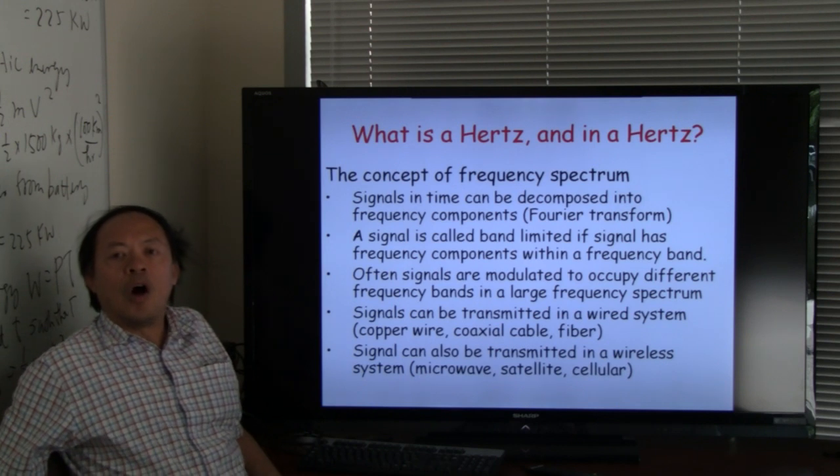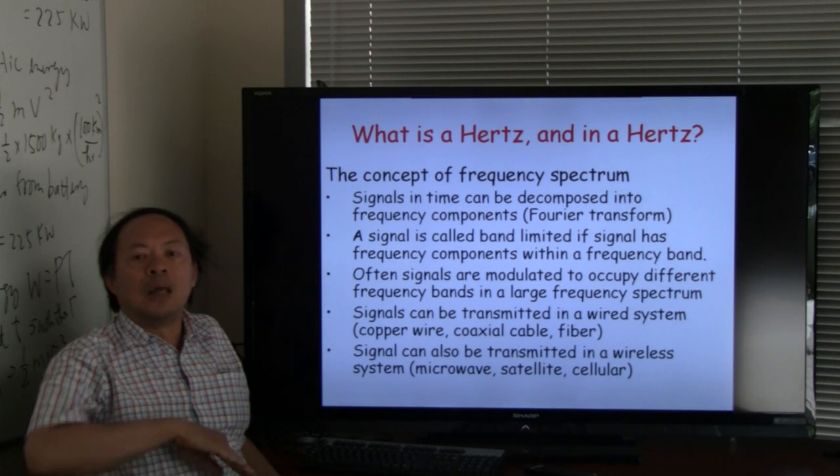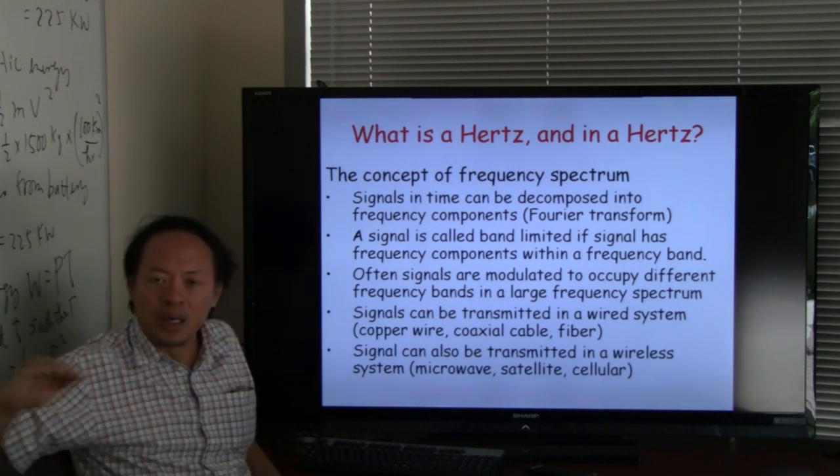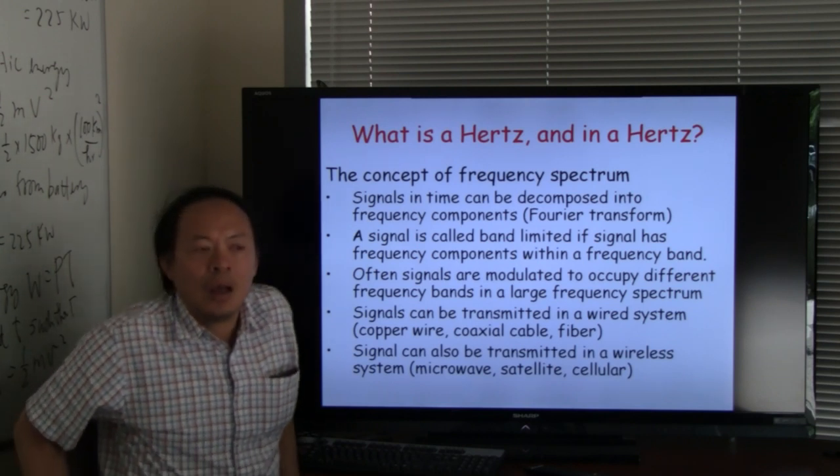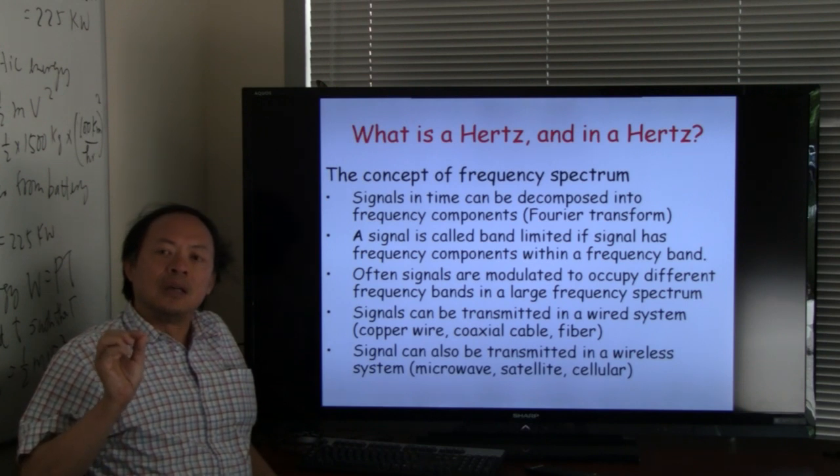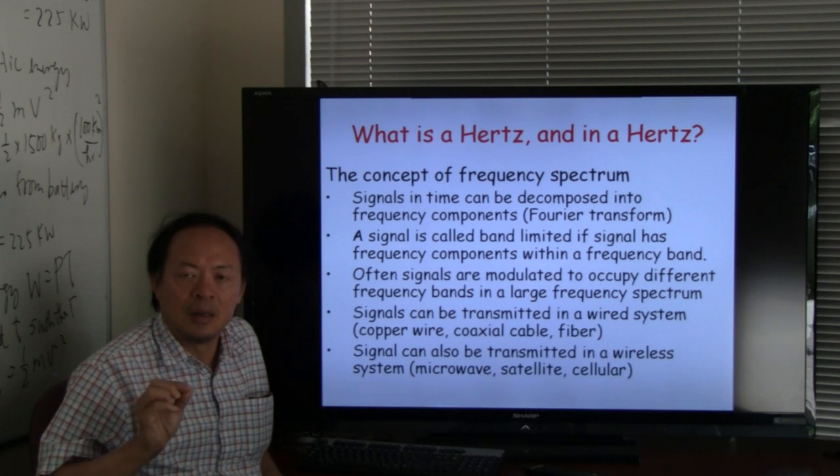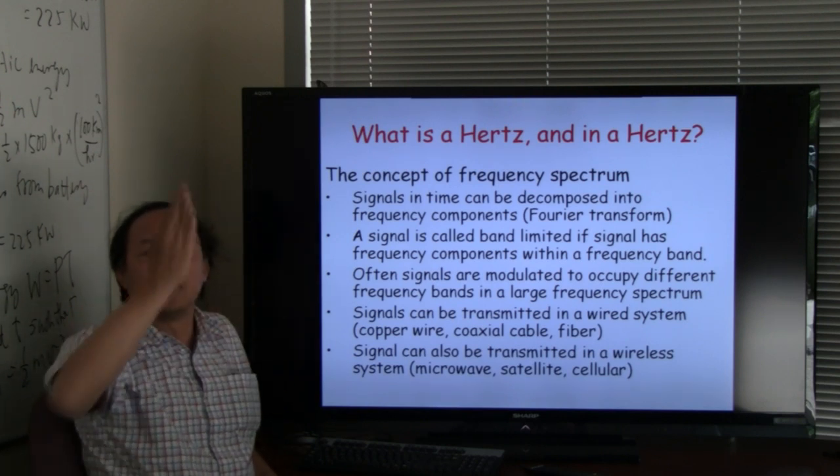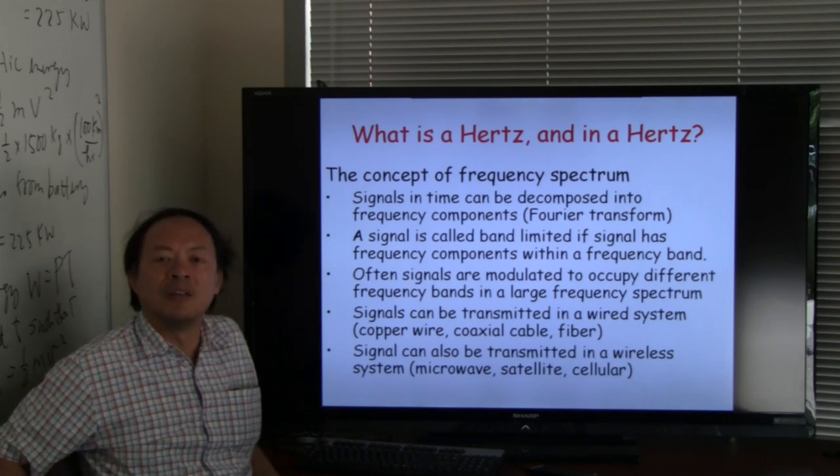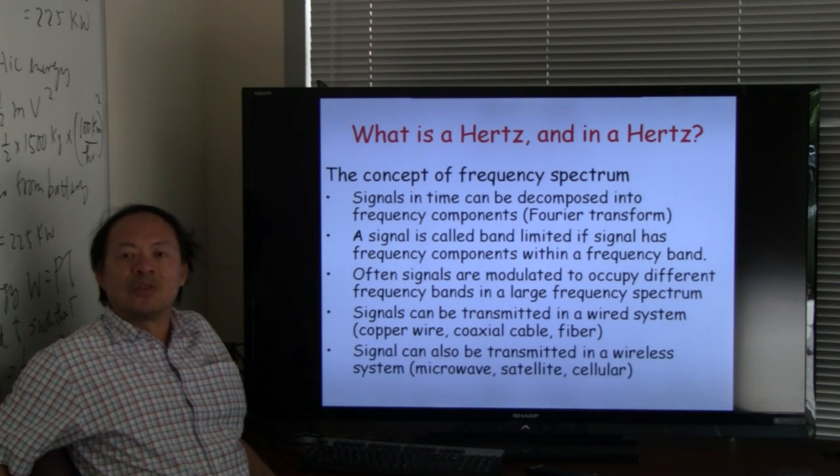Now the term Hertz refers to frequency, namely how many cycles you complete within one second. For example, we say our electricity is at a frequency of 60 cycles per second, meaning the alternating current completes 60 cycles within one second. So we say the frequency of our AC power is 60 Hertz.